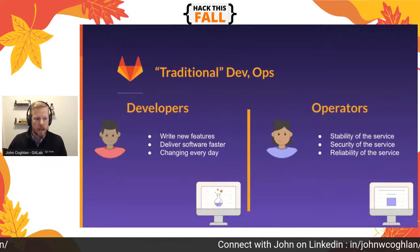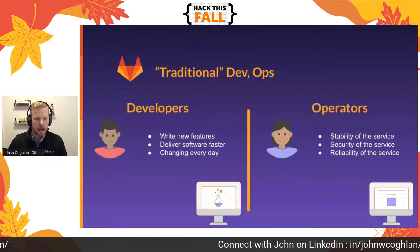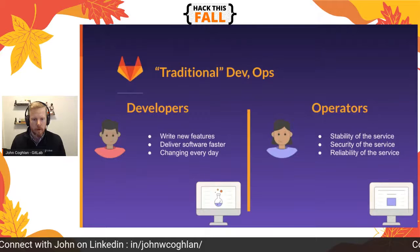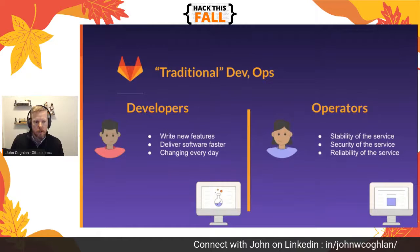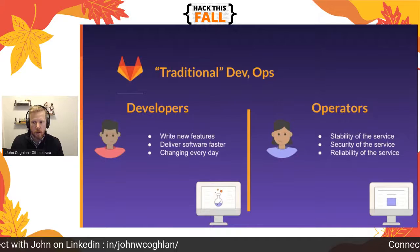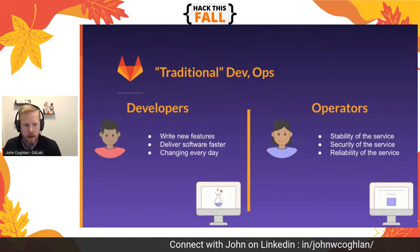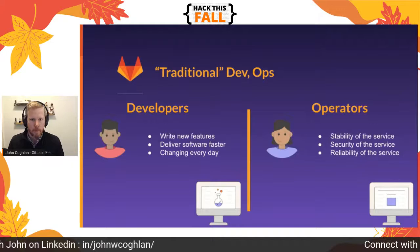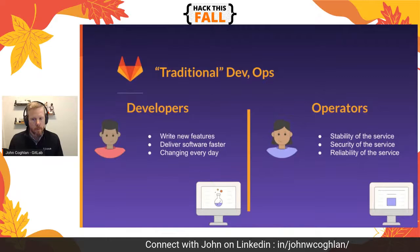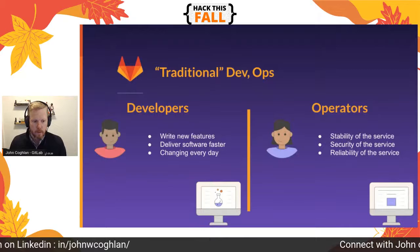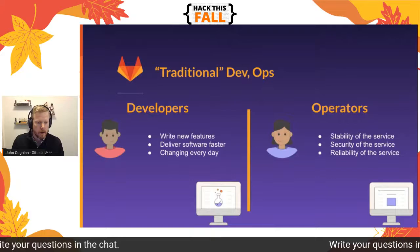In DevOps there's an added layer of complexity. You have developers writing new features and delivering software that changes every day, and then you have operators — the ops side — who worry about the stability, security, and reliability of the service. Traditionally, as you can see by that orange bar in the middle, these two groups have been a bit separate. Developers would make changes to the code base, operators would take that updated code base and deploy it somewhere, then be responsible for making sure it's stable and available for users.